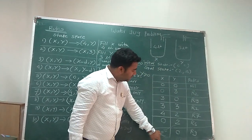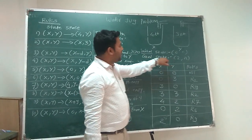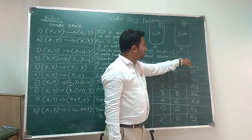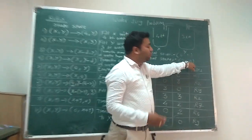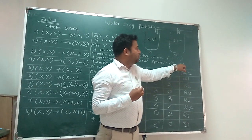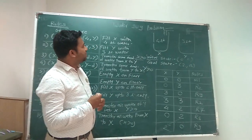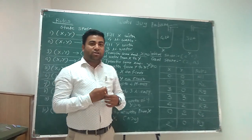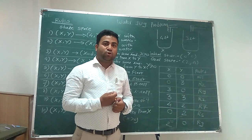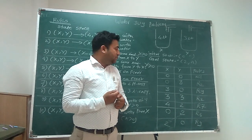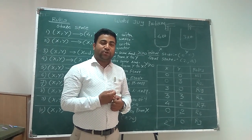We now reach the goal state (2, 0). Since n can be anything, 0 is a valid value for n, and we have exactly 2 litres in the first jug. This is the solution to the water jug problem. We have more videos on AI problems, so please subscribe to the channel for more latest videos. Thank you.